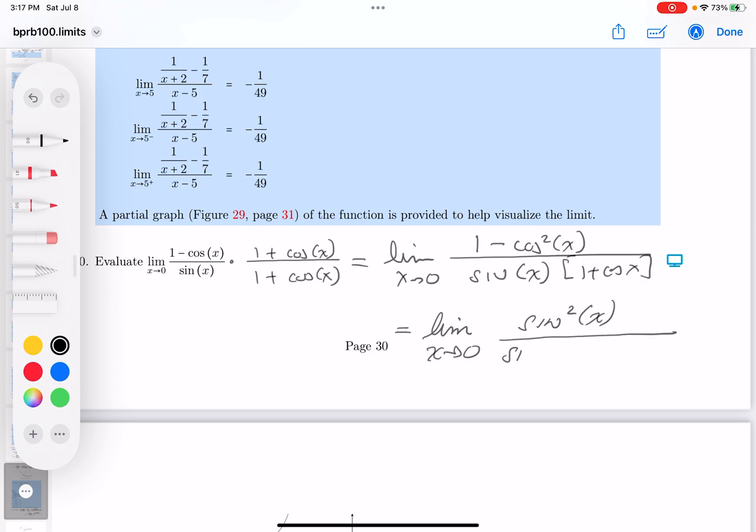And on the bottom, you get sine X times one plus cosine of X. I do see the cancellation now. I want to point out X is not zero, so the sine is not zero. So we're left off with sine X over one plus cosine of X.